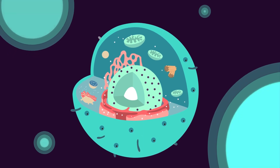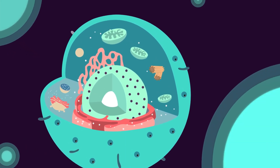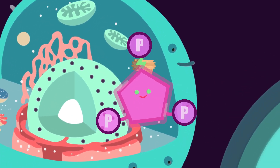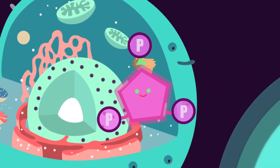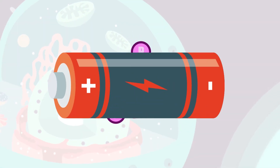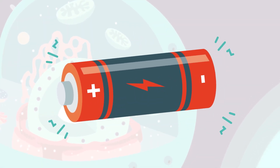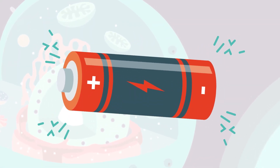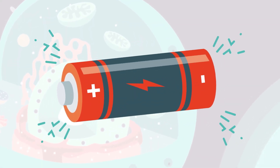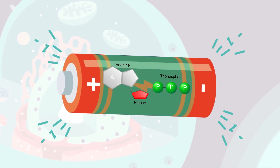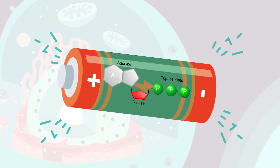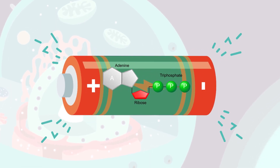Our cells are very efficient, and the most important molecule is called ATP — adenosine triphosphate. ATP is an in-cell battery that converts the energy from our food into energy that our cells can use. It's a structure that combines a nucleic acid with a sugar and a phosphoric acid chain.